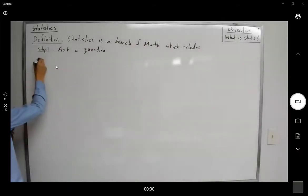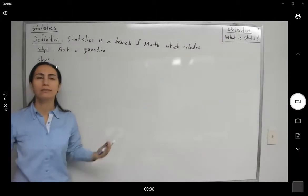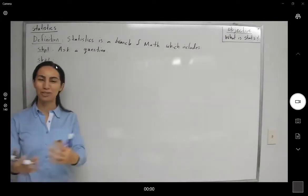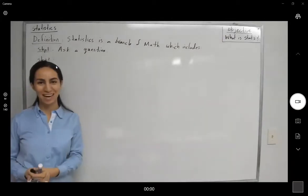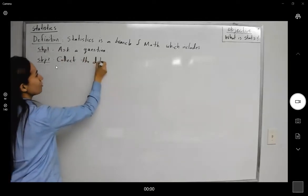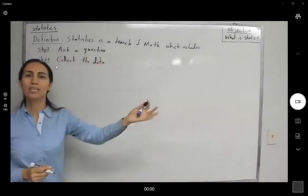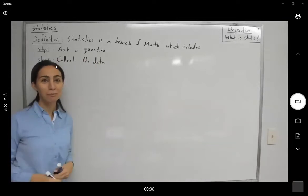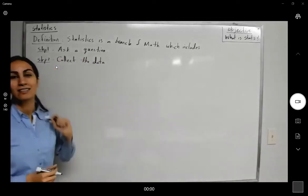Step two. Now that we asked the question, we need some information. We need to collect the data. So in step two, collect the data. We need to identify the population, take random samples, and collect the data.